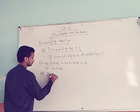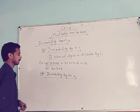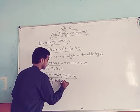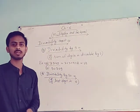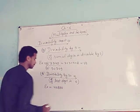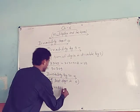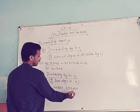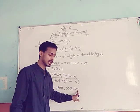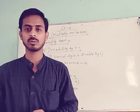Divisibility by 10: if the last digit is 0, then the number is divisible by 10. Example: 40890 — the last digit is 0, so it is divisible by 10. Another: 69910 — the last digit is 0, so it is also divisible by 10. These are the divisibility tests from 2 to 10.